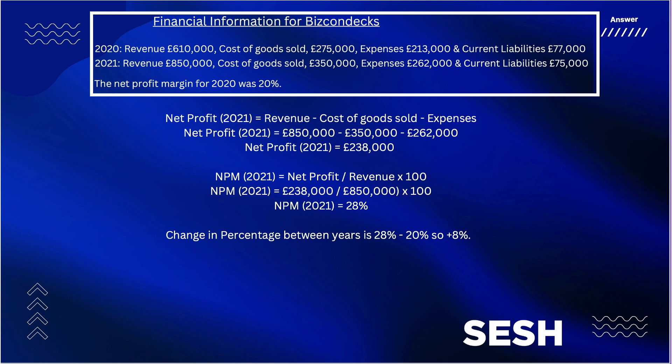Now we need to put that net profit number into the net profit margin — the NPM formula: net profit divided by revenue times by 100. So that's £238,000 divided by £850,000, because we're using the 2021 revenue, times it by 100, and that comes to 28%. So it was 20% in 2020, 28% in 2021, so the answer is plus 8%. Hope that helps.